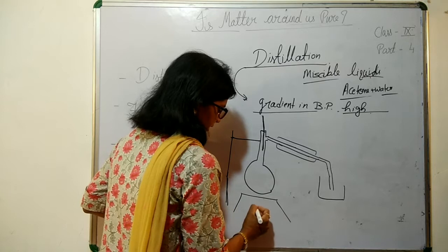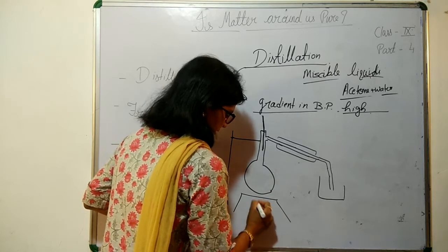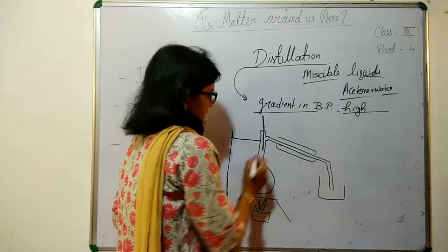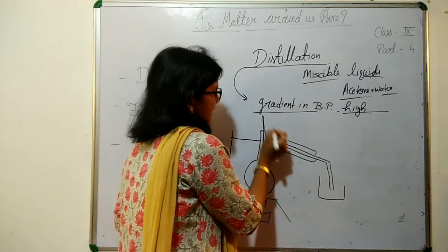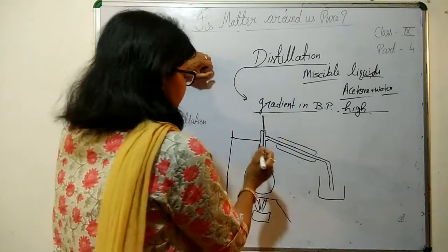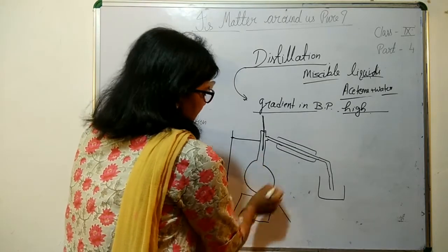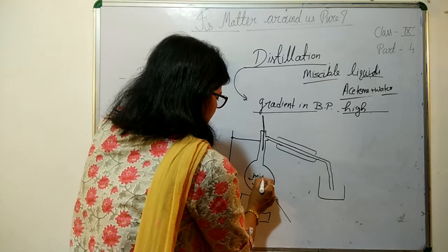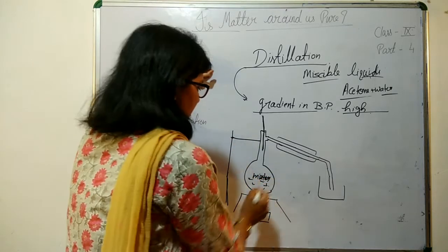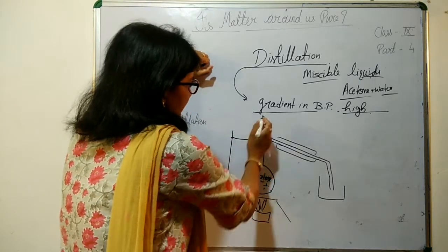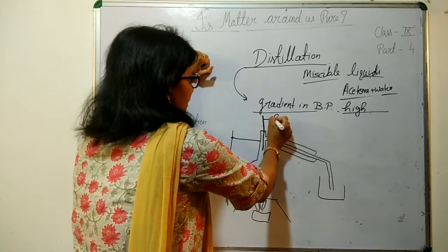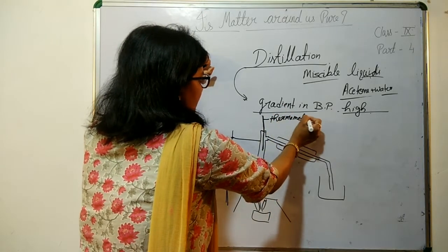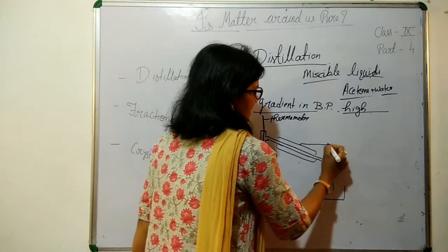It's a tripod stand. What we do — we take the distillation flask and set up the distillation process. In this distillation flask we keep our mixture. There is a thermometer which helps to measure the temperature, and there is a condenser.